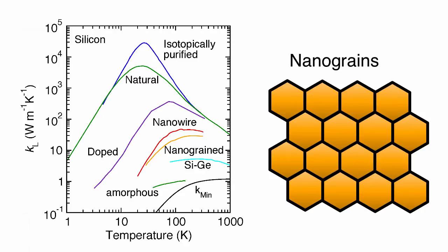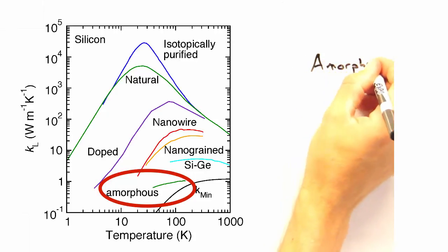And how about the nanograins? Well, we still have boundary scattering, but the boundaries are between the different grains, rather than between the material and the atmosphere. And the amorphous silicon is about as uncrystalline as you can get, which gives you a lot of scattering, and thus a really low kappa.